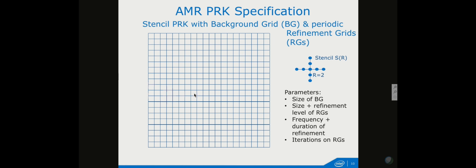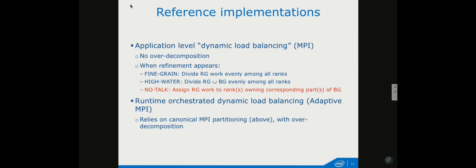You have a background grid and from time to time one refinement kicks in. For implementation, we have two reference implementations. The first is in plain MPI — there's not much dynamic in there; making it truly dynamic would probably require quite a bit of work. First, we don't apply any over-decomposition as you would with advanced runtimes like Charm++, Legion, or others.